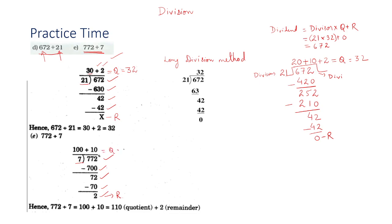You can also verify this by the long division method. Write 772 inside the box with divisor 7. 7 times 1 equals 7, remainder 0; bring down next digit, 7 times 1 equals 7, remainder 0; bring down 2. 7 times 0 equals 0, so the remainder is 2 and the quotient is 110.